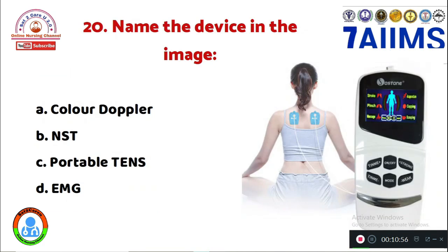Question 20: Name the device in the image. Option A: color Doppler. Option B: non-stress test machine. Option C: portable TENS. Option D: EMG. The device in this image is Option C, portable TENS.